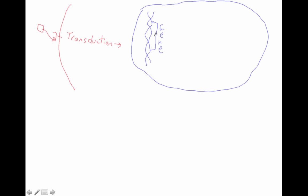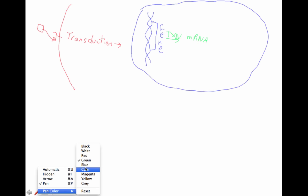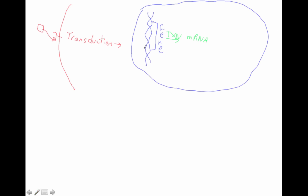We know that this gene is next transcribed — I'm going to use my abbreviation for transcription, TXN. So through transcription we make a messenger RNA. Then we learn how this messenger RNA was modified, so let's write 'modified' on this arrow.